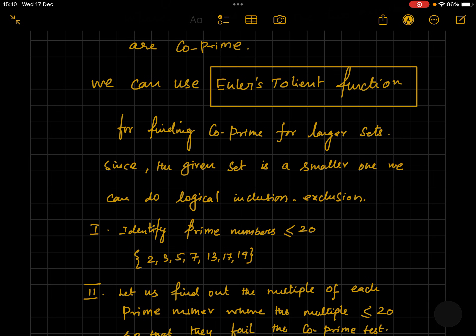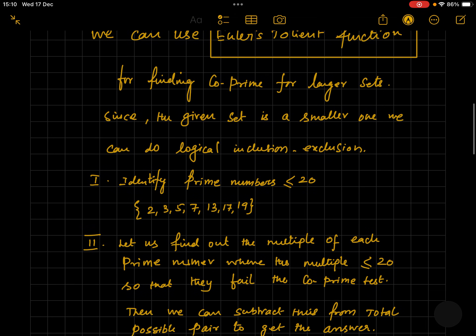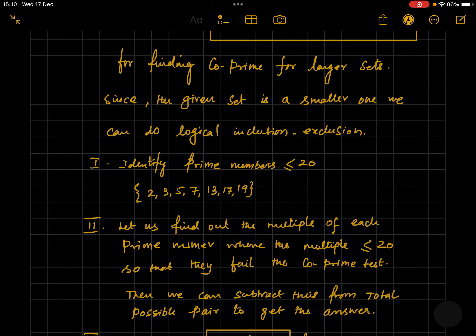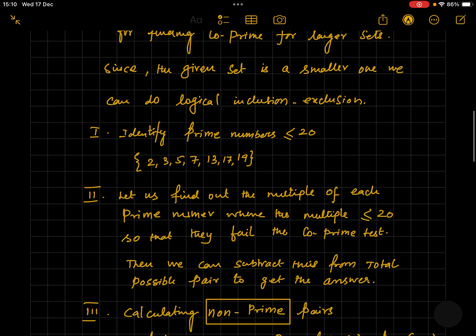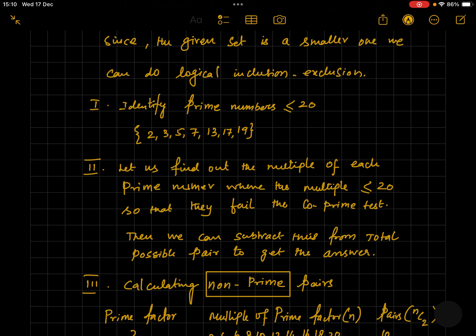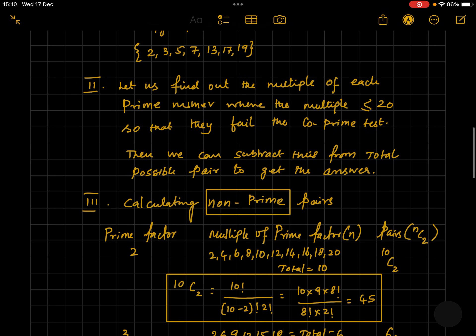Now let's first identify the prime numbers which are equal to or less than 20. They are 2, 3, 5, 7, 11, 13, 17, and 19. Now let's find out the multiples of each prime number where the multiple is less than or equal to 20, so that they fail the co-prime test. What does it mean? We are going to find out the pairs which are not co-prime.